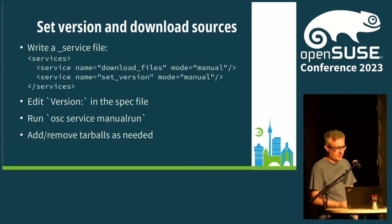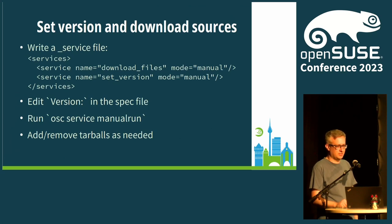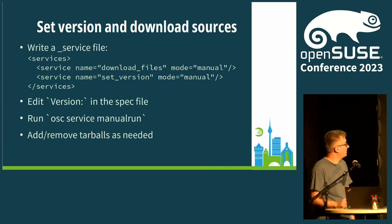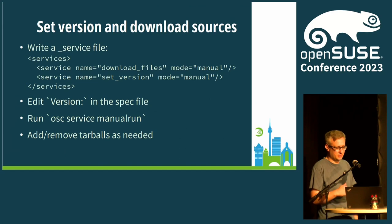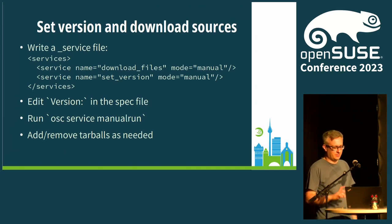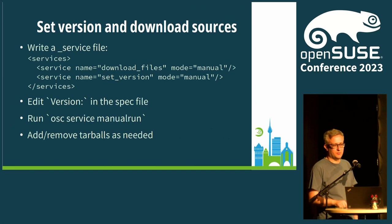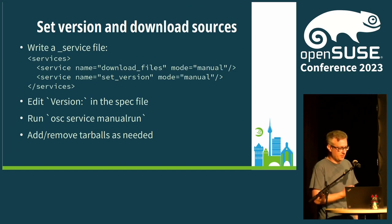Another cool thing I learned: I used to use various services to download git sources and pack those into a tarball, which was not that nice. I realized that when I do an upstream release and just need to download the tarball, these two lines in the service file are enough. I modify the version in the spec file, then run OSC service manual run, and that modifies versions in other places in the project and also downloads the new tarball from upstream. Then we add and remove tarballs and it's business as usual.